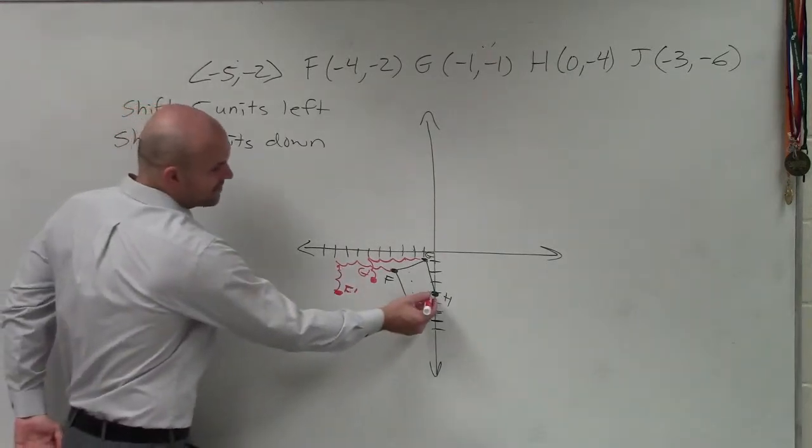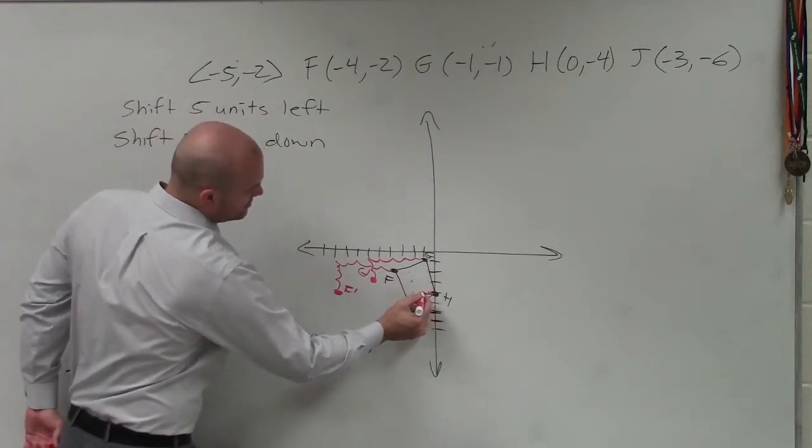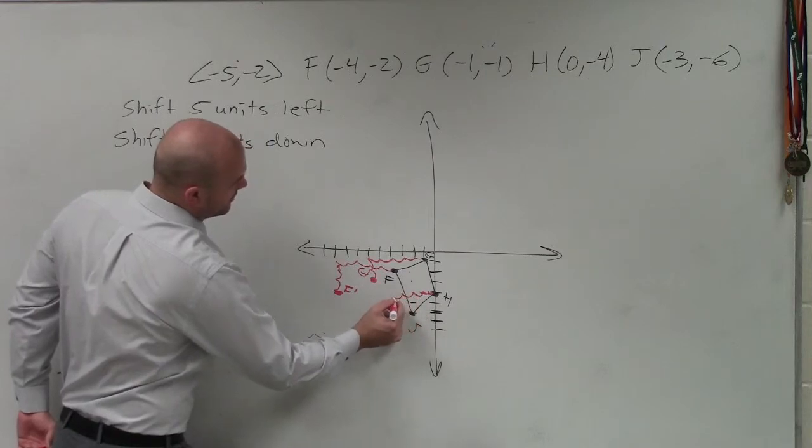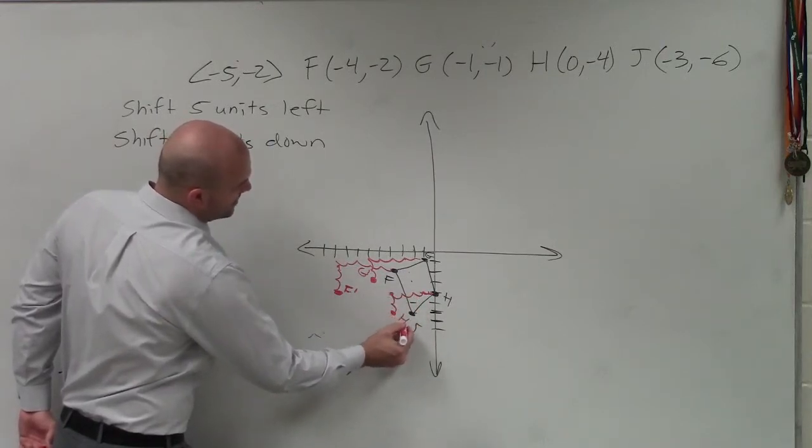H, move that five units to the left. So 1, 2, 3, 4, 5, and then 1, 2. That's now H prime.